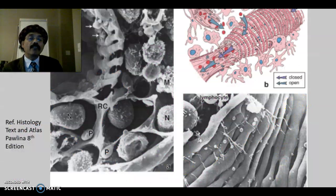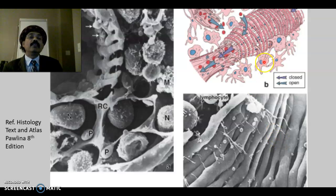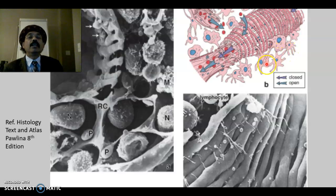These elongated endothelial cells are called stave cells. They are connected to each other, but there is a gap also present. We have macrophages present on their surface. Macrophages are present in the lymphatic cord, which is composed of reticular tissue and reticular fiber. We also have antigen-presenting cells and immunological cells present there, and they will phagocytose worn-out or old red blood cells.